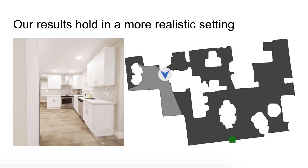Even more promising is the performance on a realistic exploration task — indoor navigation using Habitat. In this environment, audio is emitted from a source marked by the green square. The agent, represented by the blue arrow, moves throughout the scene without external supervision.